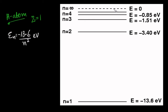As you can see, n equals infinity is 0, and this diagram is drawn to scale. n equals 1 is negative, n equals 2 is minus 3.40 — that's on this side. If we look at the midpoint, that would be minus 6.8, which falls somewhere here.